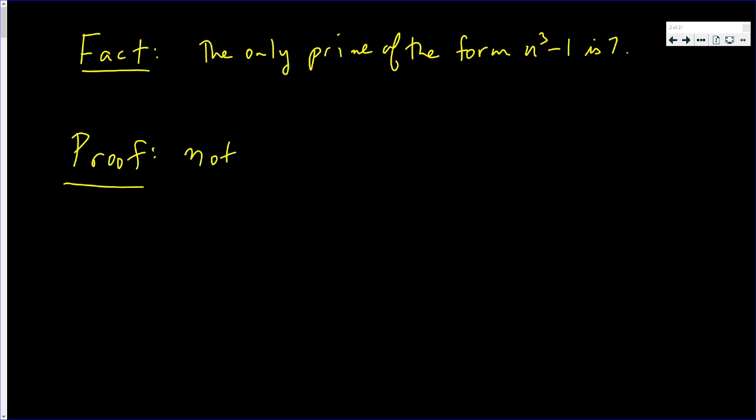To prove this, first note that n cubed minus 1 is n minus 1 times n squared plus n plus 1. It's the difference of two cubes. One cube is also 1.